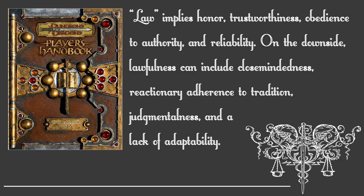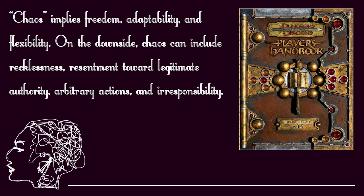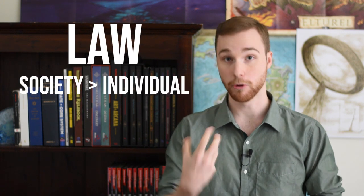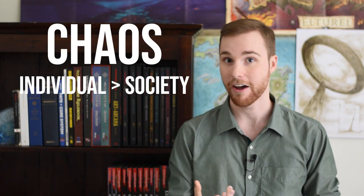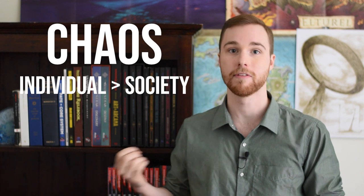However, the neutral moral theories are trying to be moral without any reference to ideals of good and evil. Because of this, I think it's pertinent to give ourselves some clear definitions of law and chaos. Law implies honor, trustworthiness, obedience to authority, and reliability. On the downside, lawfulness can include closed-mindedness, reactionary adherence to tradition, judgmentalness, and a lack of adaptability. Chaos implies freedom, adaptability, and flexibility. On the downside, chaos can include recklessness, resentment towards legitimate authority, arbitrary actions, and irresponsibility. Another way of looking at law and chaos is it reflects how your character reacts to the society around them.